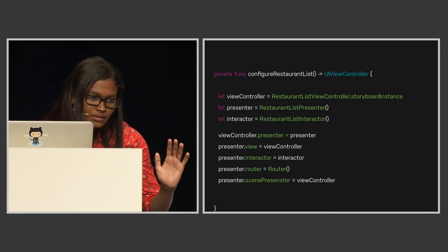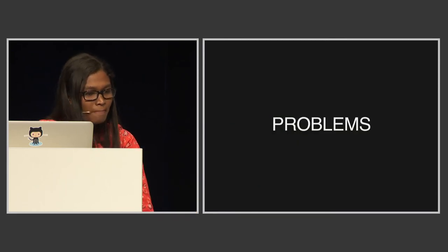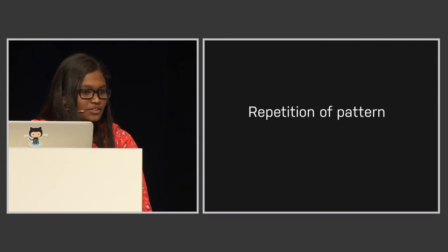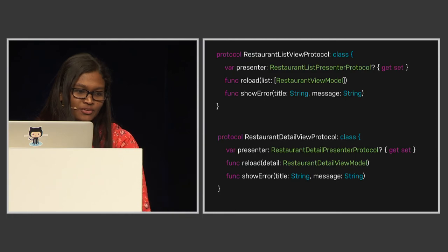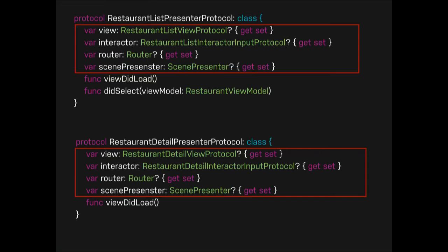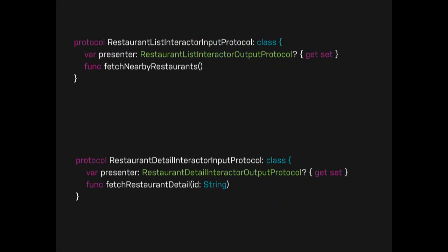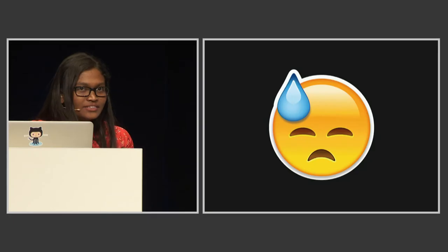But something didn't feel right. I saw the repetition of patterns. When I started developing other modules, I had RestaurantListView protocol and DetailView protocol, and both have a Presenter reference - just with different types. In all cases, we have these same four elements. And for each module, I had to write all these protocols and all these mocks for testing. It was too much work - we could do it better. So let's revisit our architecture.